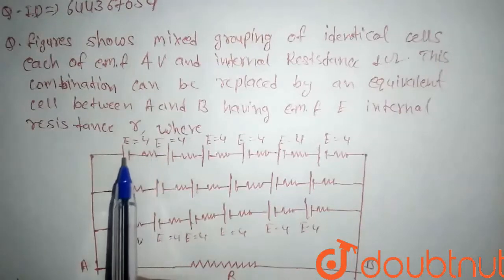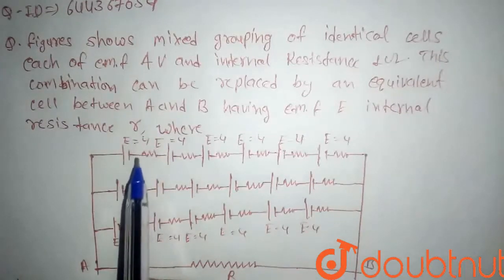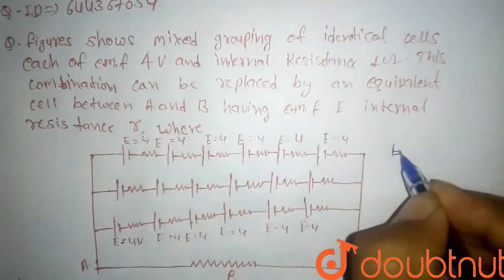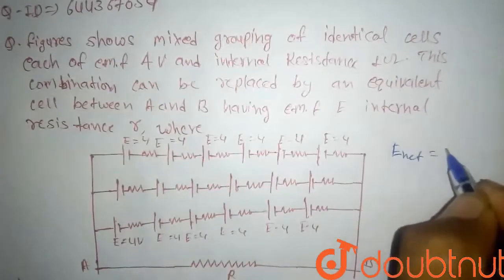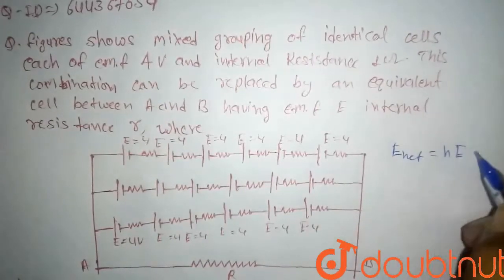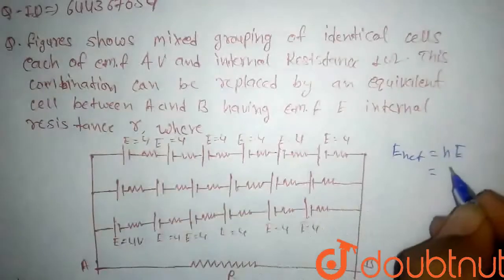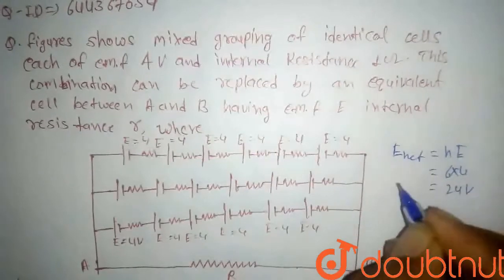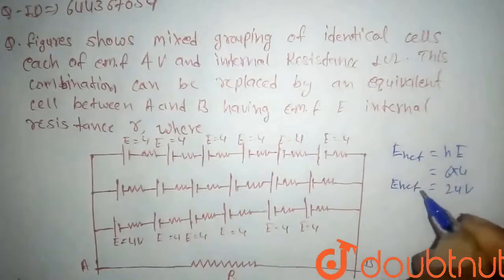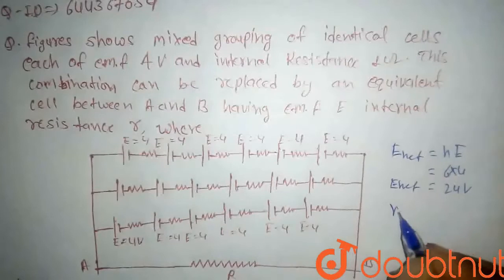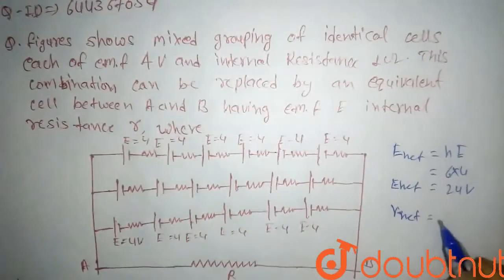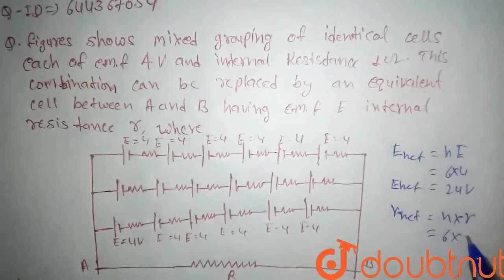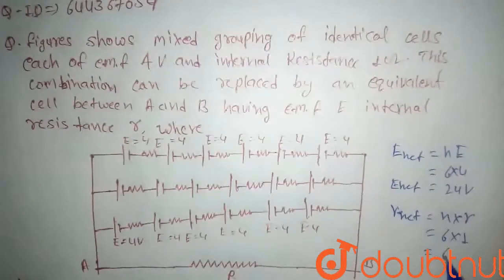Six cells of EMF 4 volt and internal resistance 1 ohm are connected in series. When n number of cells are connected in series, the net EMF is given by n into E. So here with 6 cells it will be 24 volt. The net resistance in series is given by n into r, so with n = 6 and r = 1 ohm, it will be 6 ohm.